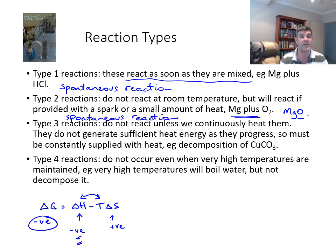So I'm going to skip down to type 4, where type 4 reactions do not occur even when very high temperatures are maintained. For example, you can have very high temperatures that you can use for the heating of water. But whilst that water may go from a solid to a liquid to a gas, and perhaps very fast-moving gas molecules with very high entropy, they will not be necessarily decomposed. This obviously is a non-spontaneous reaction.